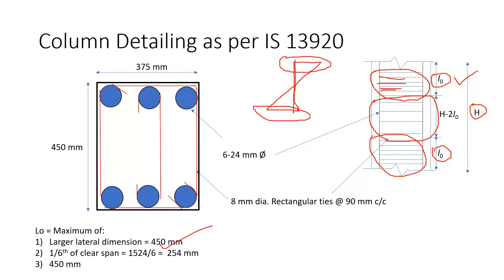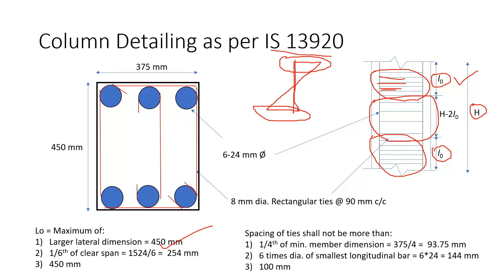And what will be the spacing of these lateral ties? So as per the code IS 13920, the spacing of these ties should not be more than 1 4th of minimum member dimension, 6 times smallest L0 bar and 100 mm. So in our case it is 93.75 mm.